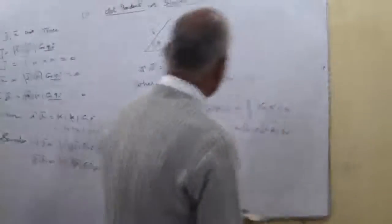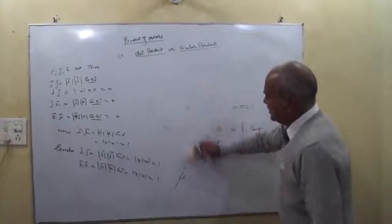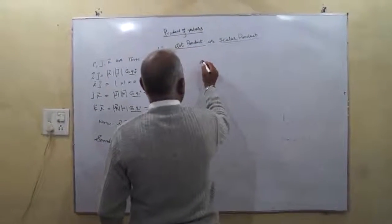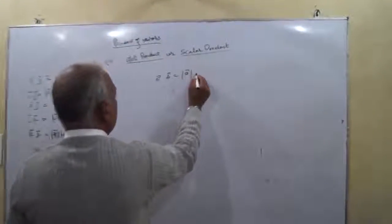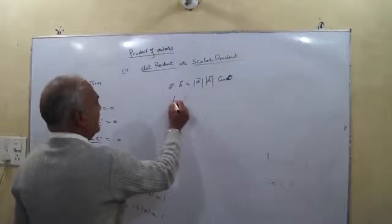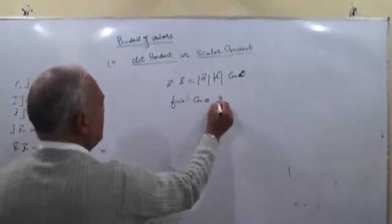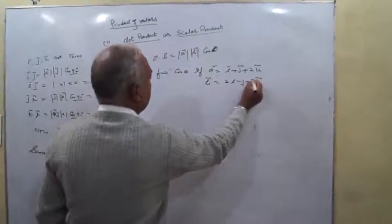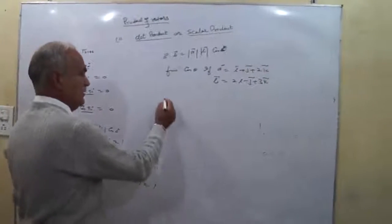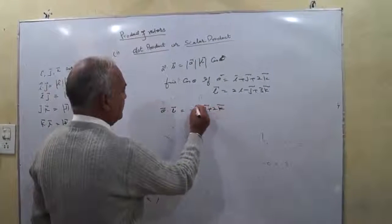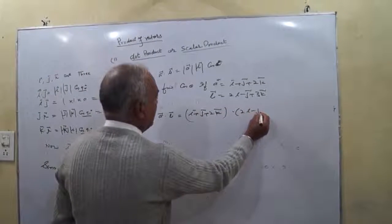Now we will use the dot product formula to derive the result of A dot B. A dot B equals |A| times |B| times cos theta. Find cos theta if A vector equals I plus J plus 2K, and B vector equals 2I minus J plus 3K. First, find A dot B.